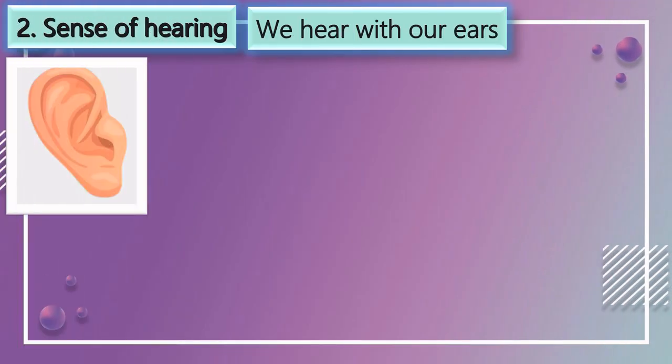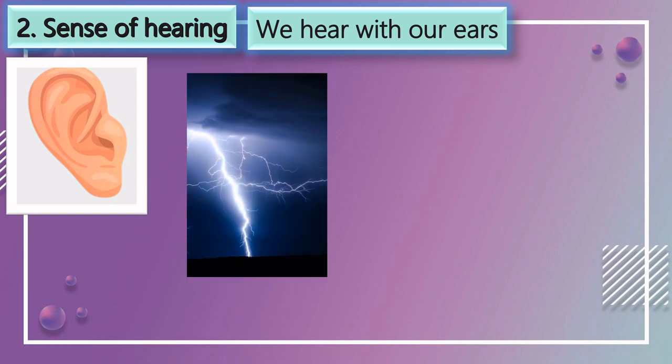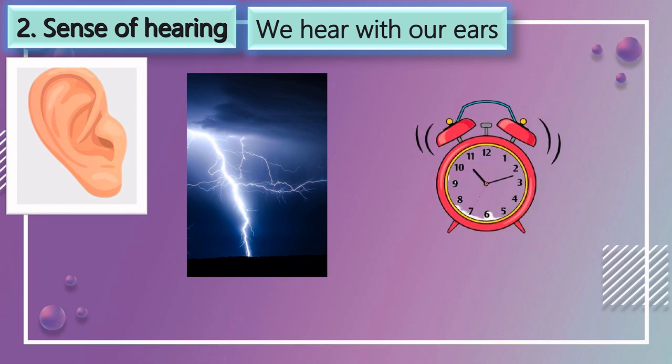Second one is sense of hearing. We hear with our ears. Now let us hear some sounds. It is thundering, so a thunderstorm tells us that it is going to rain. Our next sound is alarm clock — when we hear the alarm clock, we wake up.